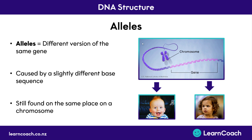So an allele is a different version of the same gene. To have an allele, you need to have a specific trait — for example, hair colour — and the alleles are the different versions of the hair colour gene. For example: ginger hair, brown hair, blonde hair, or black hair. These all have slightly different base sequences, causing the protein that's made to be slightly different, and causing them to have a different trait.